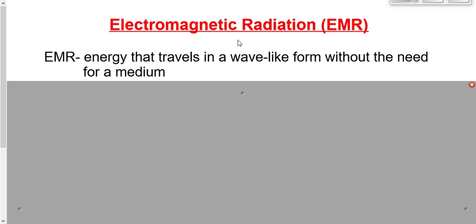It also consists of a magnetic field, which we looked at last unit. Those two fields are both sinusoidal — sine waves. When we picture a wave, that's what we picture: a sinusoidal wave. These fields are both sinusoidal.